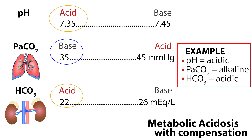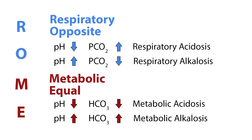We've looked at how the levels of CO2 and HCO3 can alter the blood pH. However, the body does try to bring the pH back to normal by compensating for the imbalances. For example, if the pH is acidotic, the CO2 is alkalotic, and the HCO3 is acidotic — both the HCO3 and pH are acidotic, making the primary acid-base disorder metabolic acidosis. The CO2 is opposite of the pH, and would be evidence of compensation from the respiratory system.